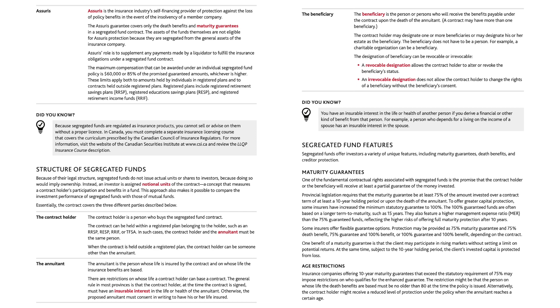A revocable designation allows the contract holder to alter or revoke the beneficiary status. An irrevocable designation does not allow the contract holder to change the rights of a beneficiary without the beneficiary's consent. Did you know? You have an insurable interest in the life or health of another person if you derive a financial or other kind of benefit from that person. For example, a person who depends for a living on the income of a spouse has an insurable interest in the spouse.